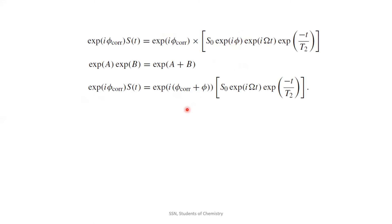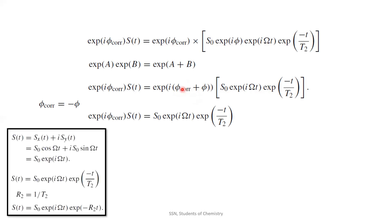Until we could see only minus phi. Hence, exponential of I phi correction plus phi would become exponential of 0 and exponential of 0 is nothing but 1. Hence, we get our final equation which is very same to our previously derived equation.